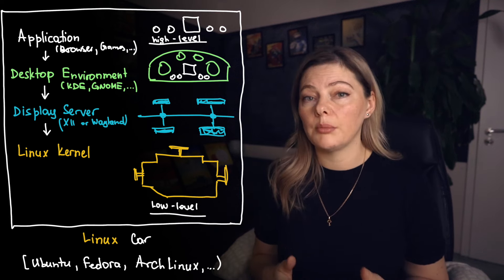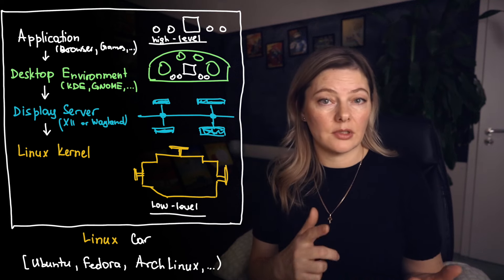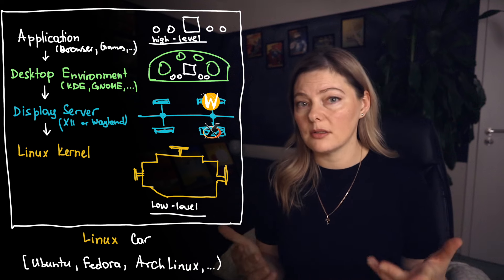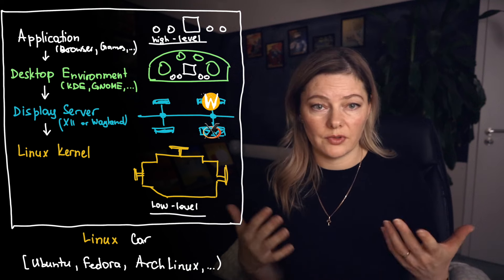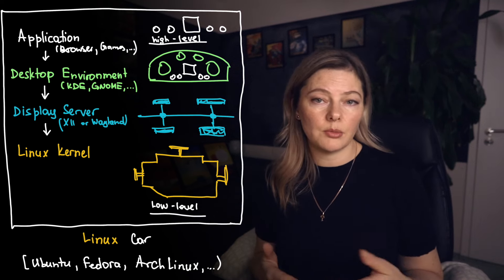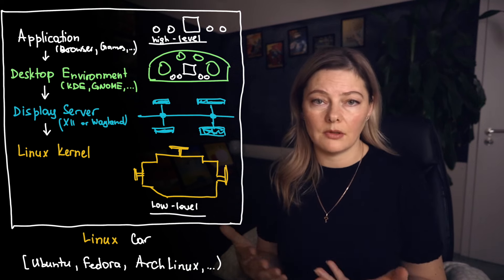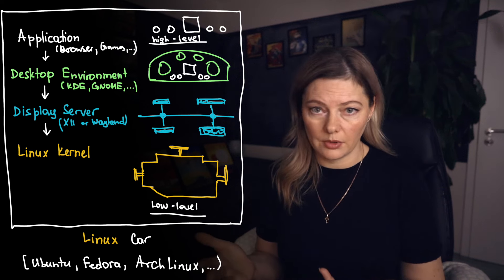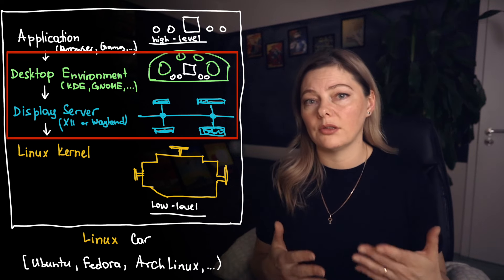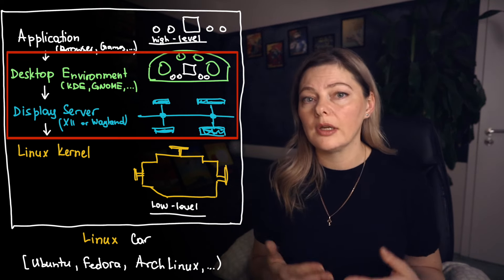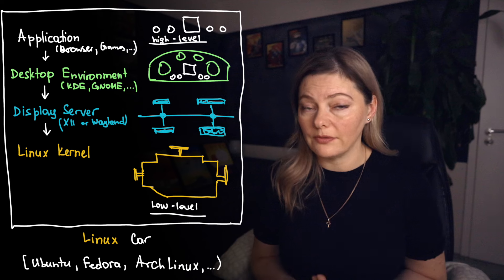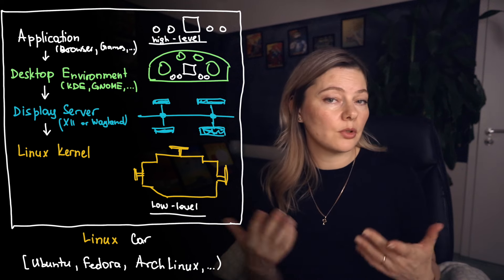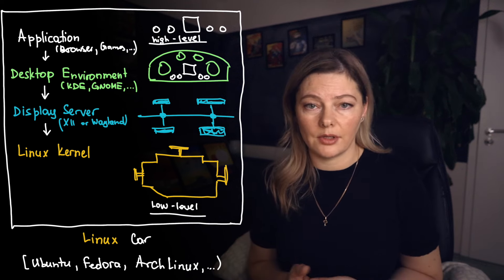So to sum this all up, we have the display server — like X11 or Wayland — and it is the basic structure for displaying graphics. The desktop environment builds on this to create the user interface you interact with. And together, they turn the raw power of the kernel into a usable visual experience. And that's how we get from the kernel to what you see on the screen.